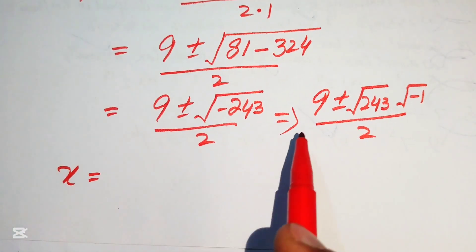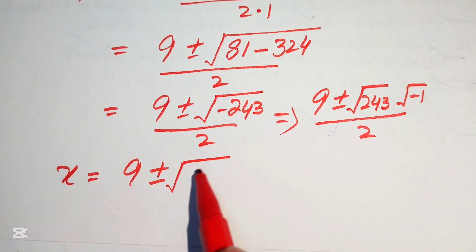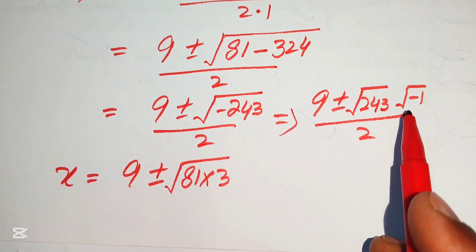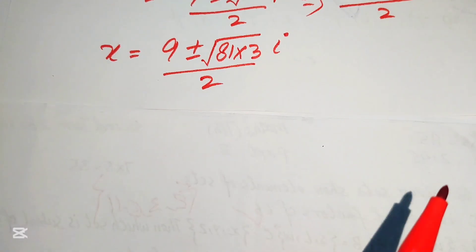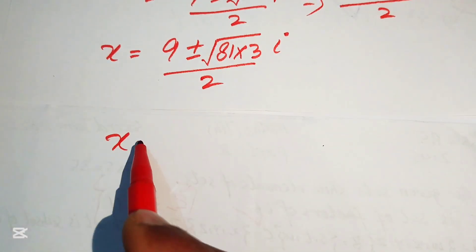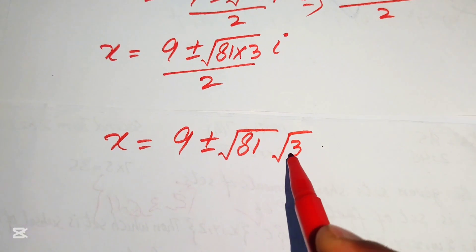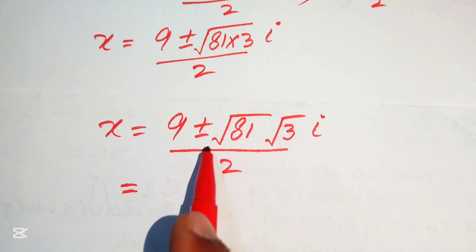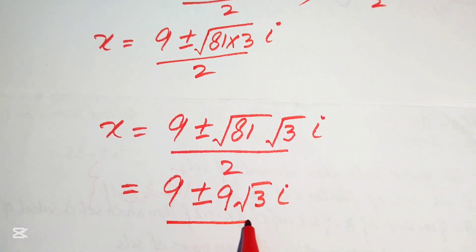We rewrite 243 as 81 times 3, since 81 times 3 equals 243, and we know that the square root of minus 1 equals iota. Separating the square root gives x equals 9 plus or minus the square root of 81 times the square root of 3 times iota, divided by 2. Since the square root of 81 is 9, this becomes x equals 9 plus or minus 9 root 3 iota, divided by 2.